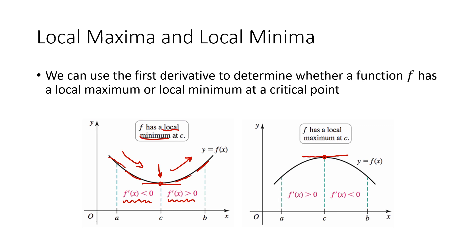On the other hand, if my slope changes from positive to negative — here on the picture on the right — that means I have a local maximum. My function was going up and then it started going down, so I reached a maximum point.